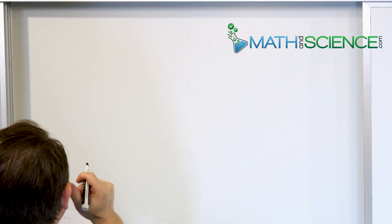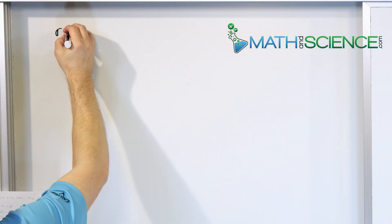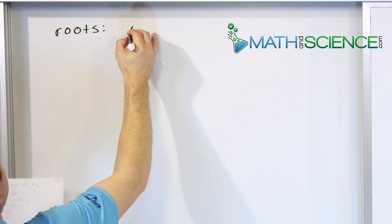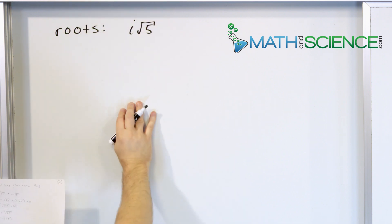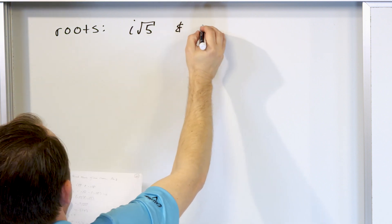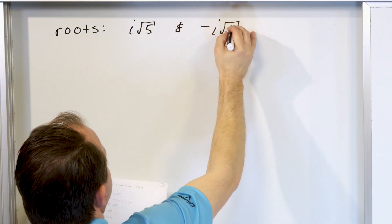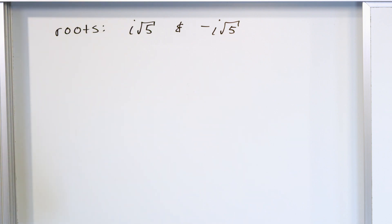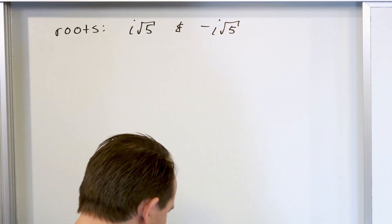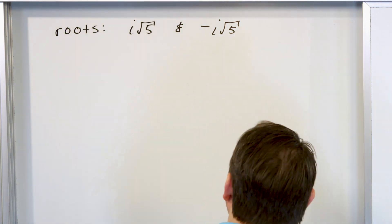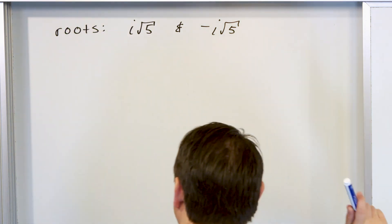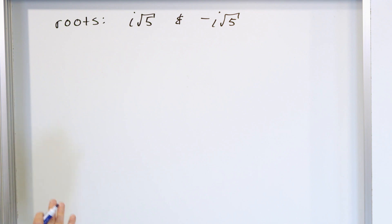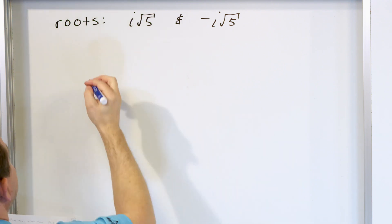What if I tell you that some quadratic has the following roots? Root number one is i times the square root of 5, and root number two is negative i times the square root of 5. I want you to tell me what the quadratic function is that has integral coefficients — whole number coefficients — and has these roots.